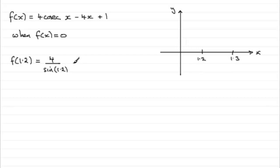And then we've got minus 4 times the 1.2 and then finally plus 1. Now you've got to be careful. x is given in radians, so make sure your calculator is in radians mode.